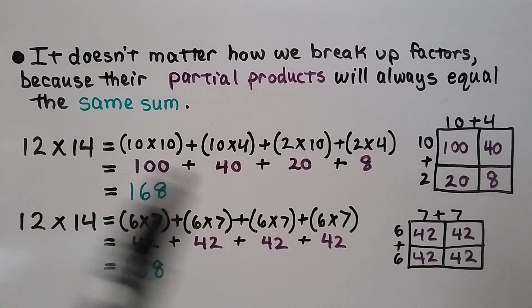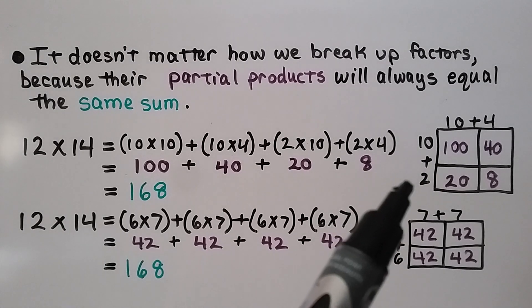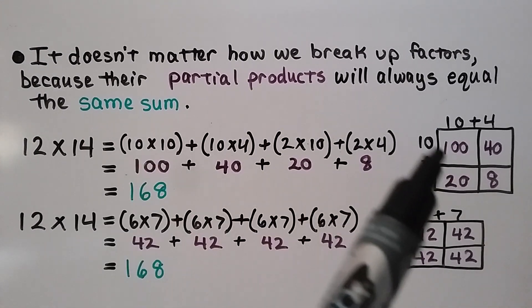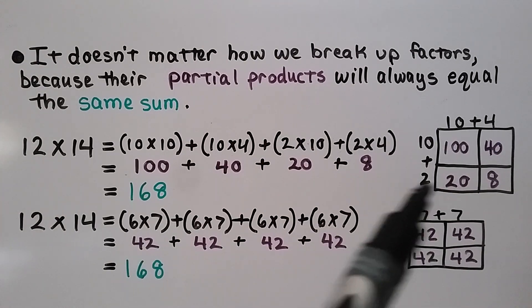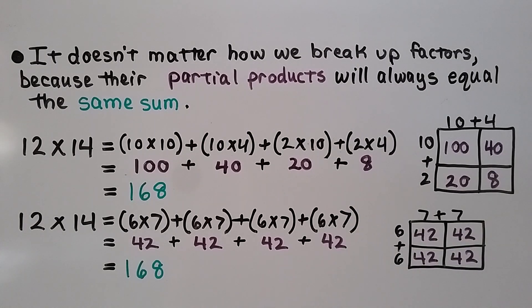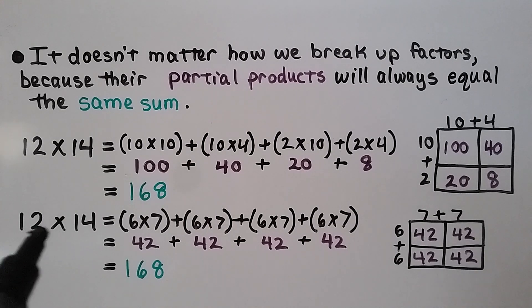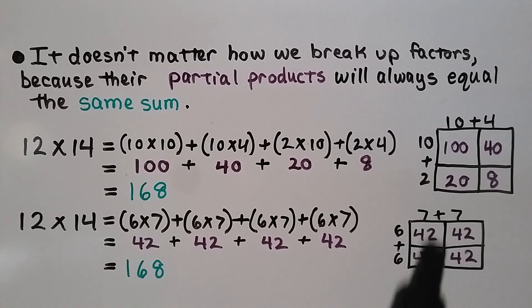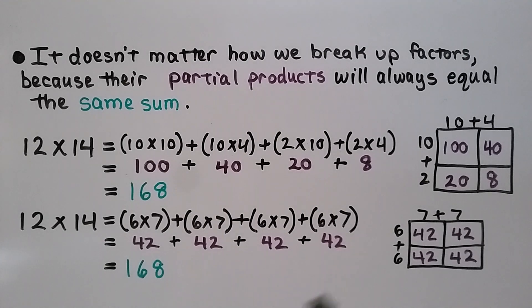Here we have 12 times 14. We broke the 12 into 10 plus 2 and the 14 into 10 plus 4. So we have 10 times 10 (100), 10 times 4 (40), 2 times 10 (20), and 2 times 4 (8). We add our partial products and get 168. We can also try breaking 12 times 14 into 6 plus 6 and 7 plus 7, giving us 6 times 7 four times: 42 plus 42 plus 42 plus 42 also equals 168. So it doesn't matter how we break up factors — their partial products will always equal the same sum.